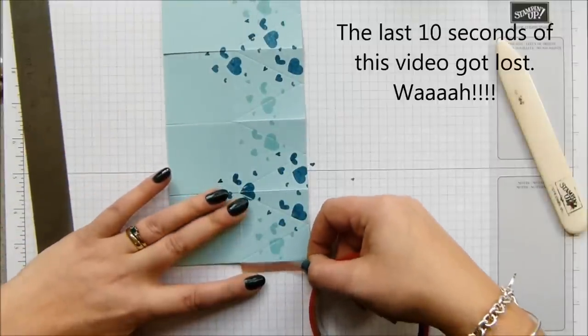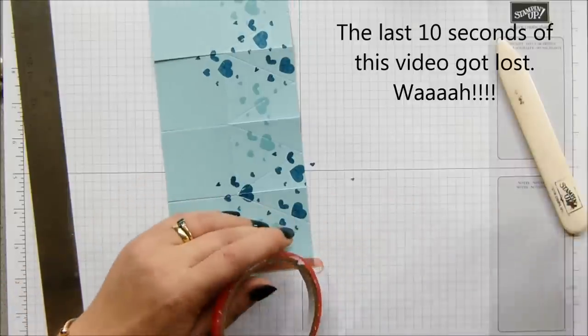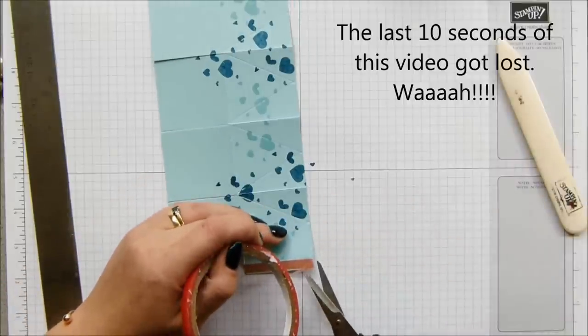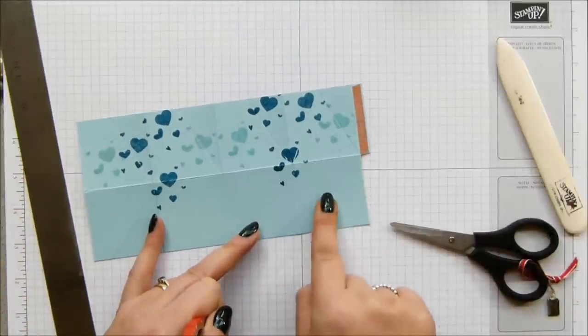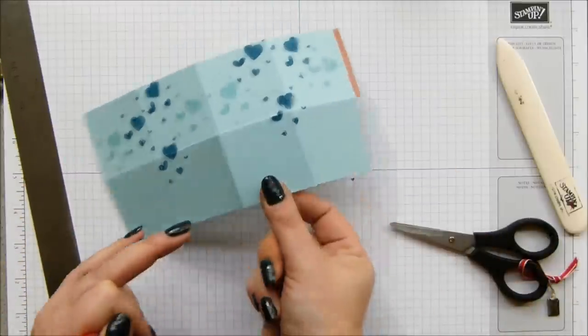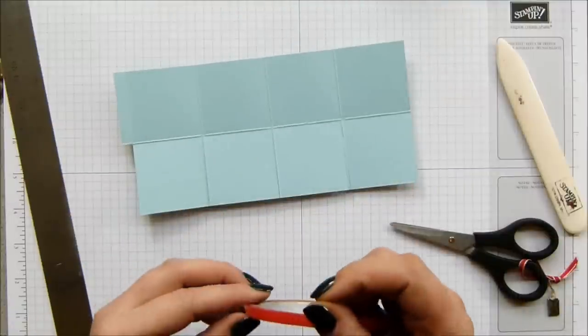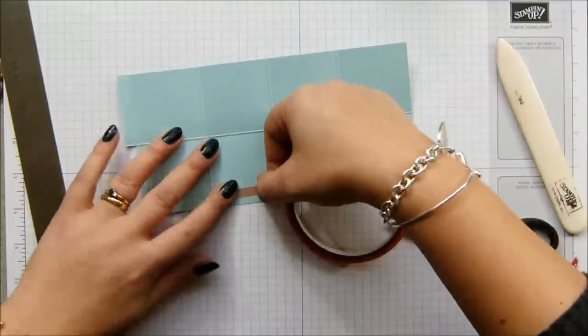Put a sticky strip along that section there. And then we want one not on the square next to the sticky strip, but the one over, and it's going to go on the other side. And that's just going to close it all up.